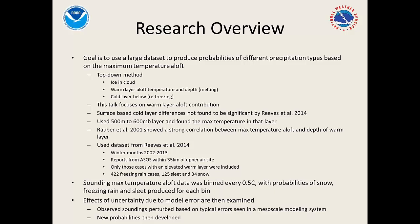We used the dataset from Reeves et al., which had a large number of cases — no need to reinvent everything. The dataset covers 2002 to 2013 and includes all cases of winter weather within 35 kilometers of an upper air site. We only included cases with an elevated warm layer, which resulted in 422 freezing rain cases, 125 sleet cases, and 34 snow cases. We then binned these by every half degree Celsius and derived probabilities of snow, freezing rain, and sleet for each bin.